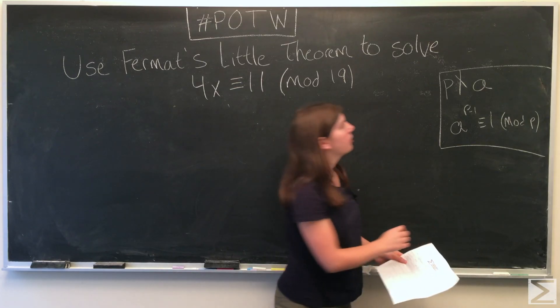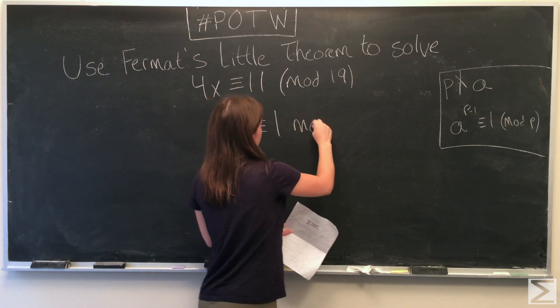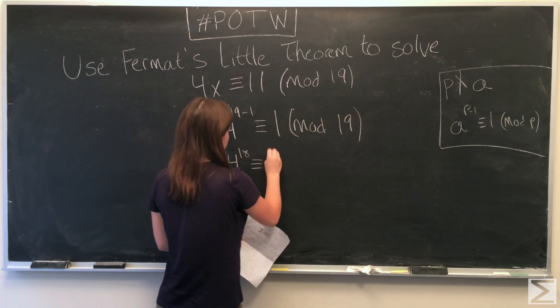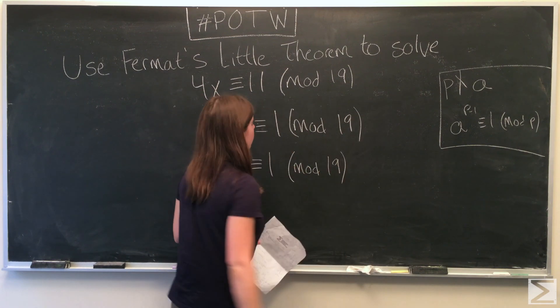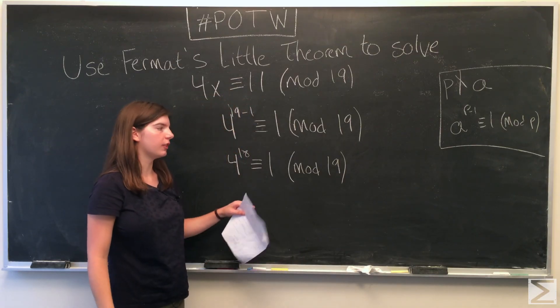In our problem, A is equal to 4 and P is 19. So Fermat's little theorem tells us that 4 to the 18th is congruent to 1 modulo 19.